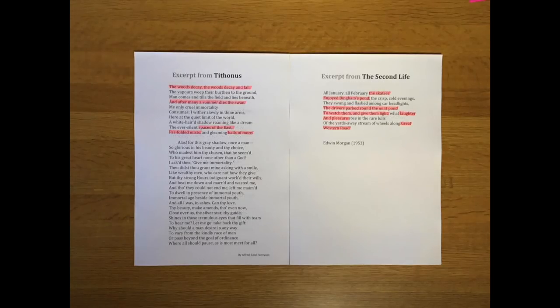This is an excerpt from Tythonus, which was written by Tennyson, which Morgan pinches some lines from in the course of Winter. And the significance of Tythonus is that he fell in love with the goddess Aurora, and maybe as you do if you've got a goddess in love with you, he asked her for the gift of immortality.